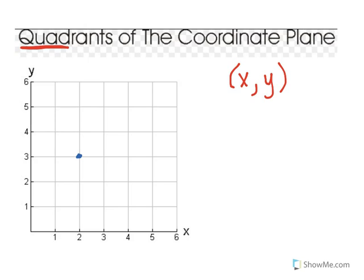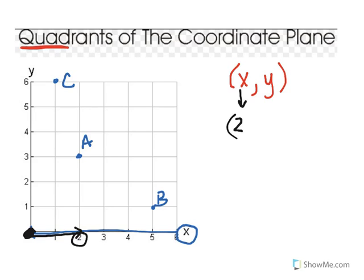Let's go ahead and begin by plotting some points and discussing the ordered pairs. I'm going to call this point A, that point B, and C. Let's begin with point A. Remember, the x comes first, so we're going to go side to side. We always begin at zero, zero. To get to point A, I have to move side to side — I'm going to move two units to the right, and it's a positive.